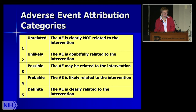Assigning attribution can be challenging depending on the level of understanding and expertise at the CRA or nursing level. Attribution ranges from unrelated up to definite, with unlikely, possible, and probable in between. Unrelated and definite are sometimes easy to determine, but the levels in between can be challenging — this is where I really encourage the investigator to be pulled in and help make these decisions so accurate information is provided.